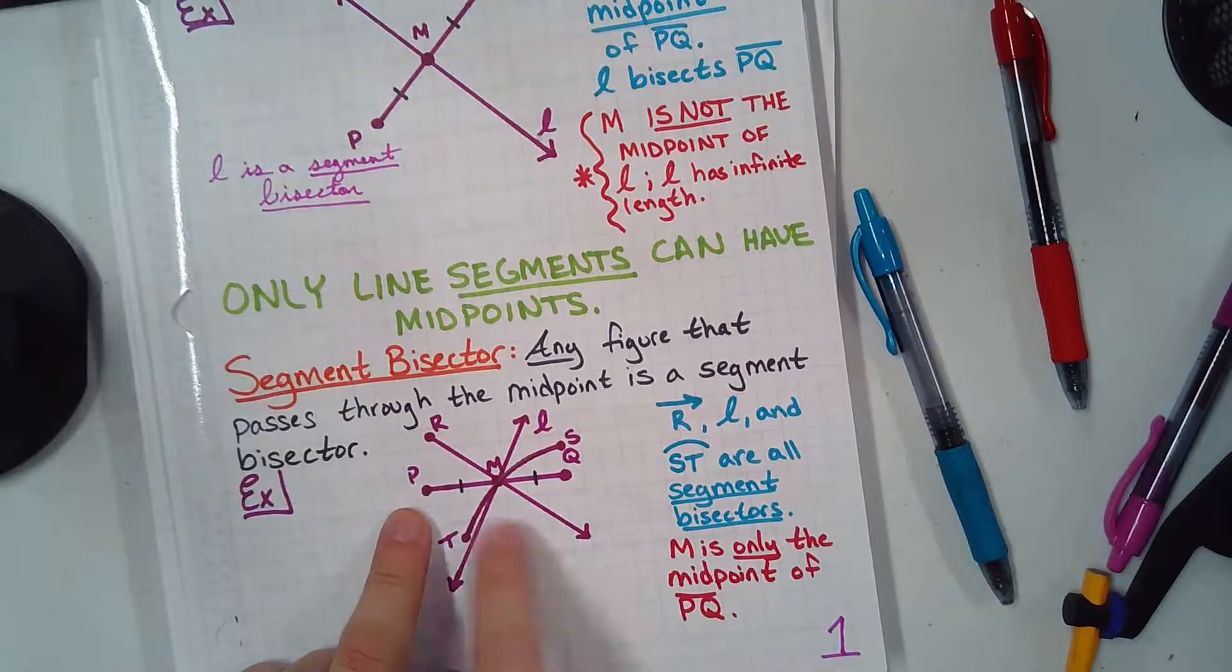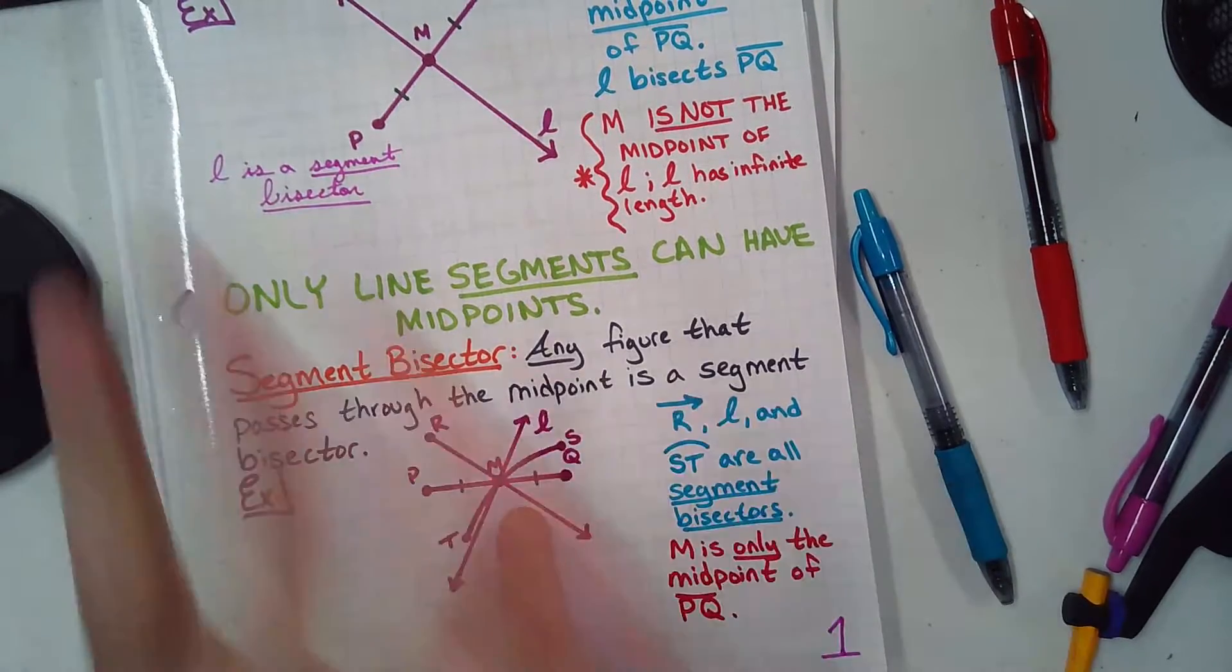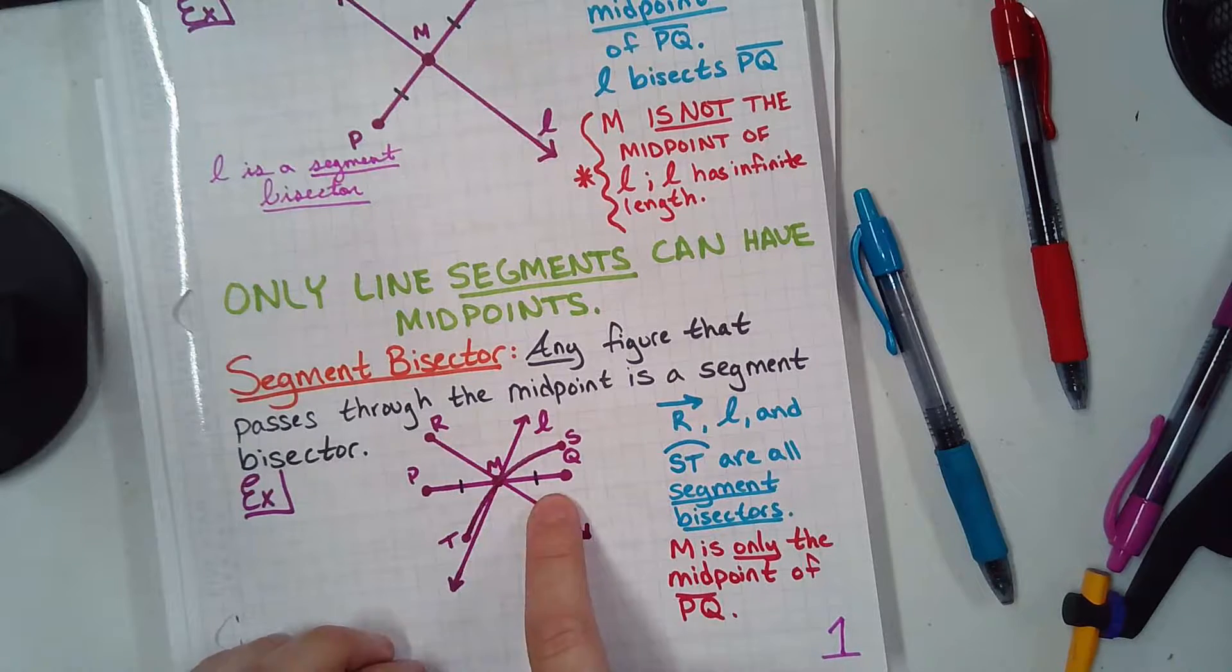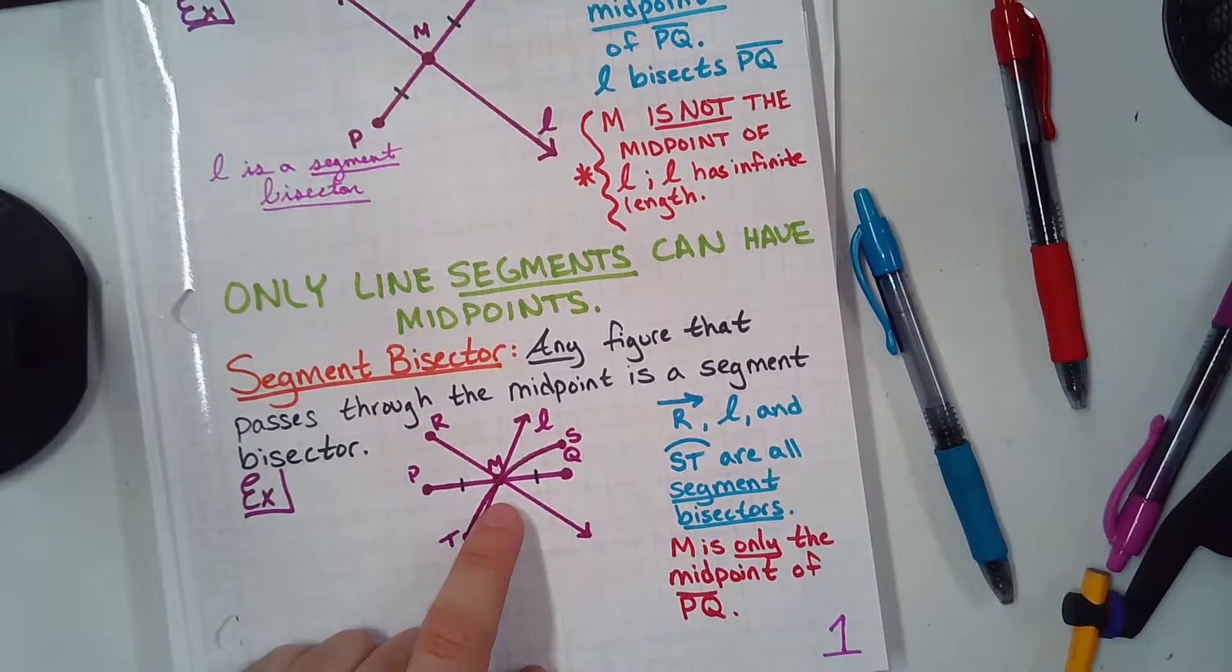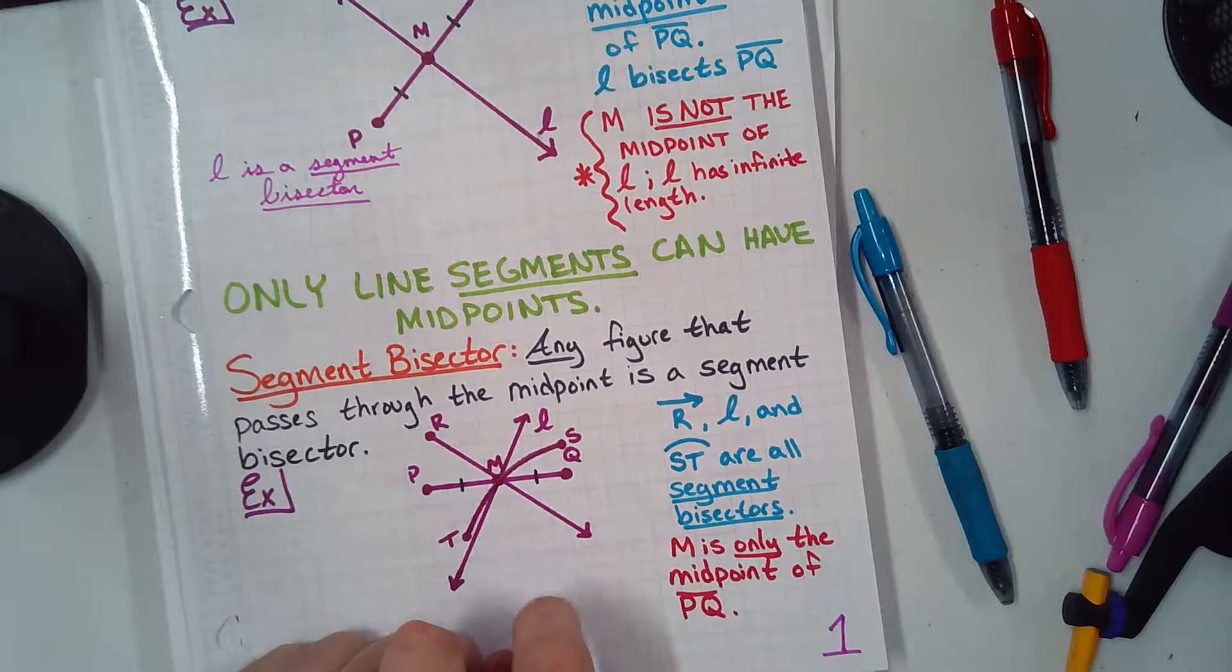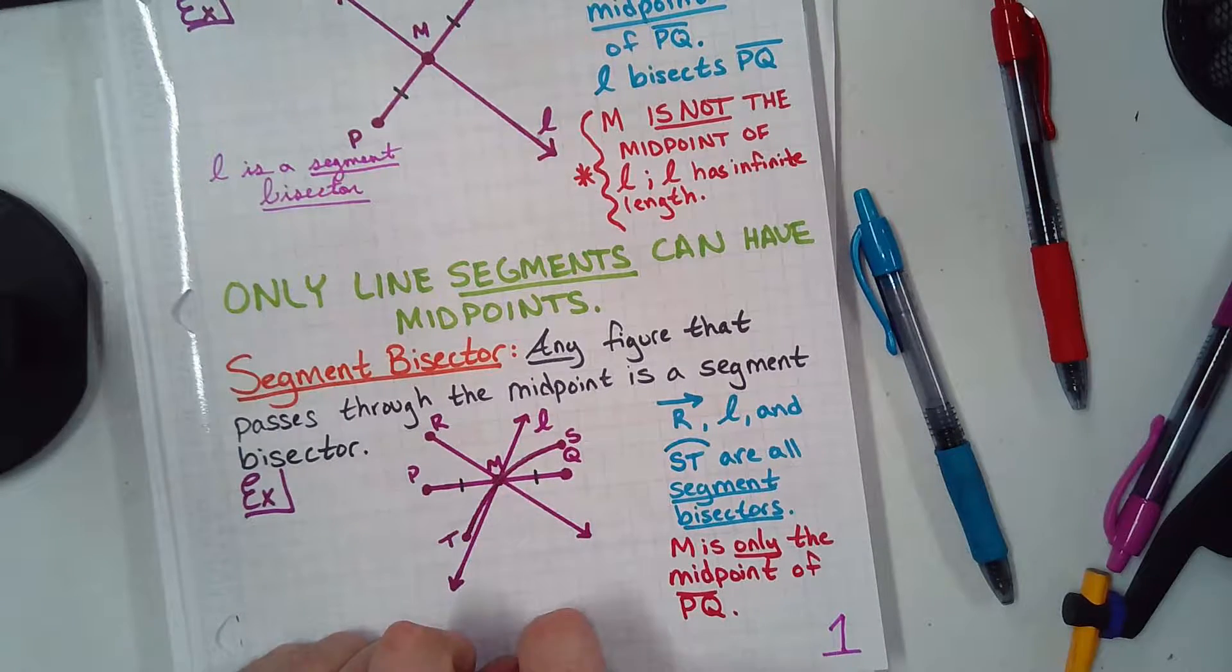So, if you look at Ray RM, Ray RM is a bisector of segment PQ. So, it is a segment bisector. It's a thing cutting in half. See how it goes to the midpoint? Now, is the midpoint the midpoint of the Ray? No, because Rays go on forever. Just like at the pie eating contest.